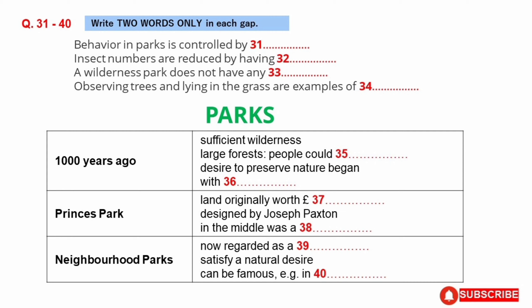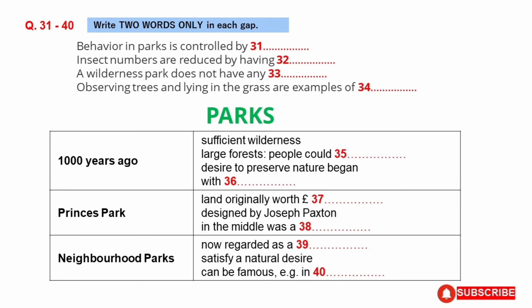Most of us are familiar with a local park. We spend time there, play there, and have some of our best memories in these places. But what is a park? Basically, it can be defined as a natural, or at least semi-natural, piece of land, planted with a variety of trees, bushes, and flowers, protected and reserved for the enjoyment of all citizens.